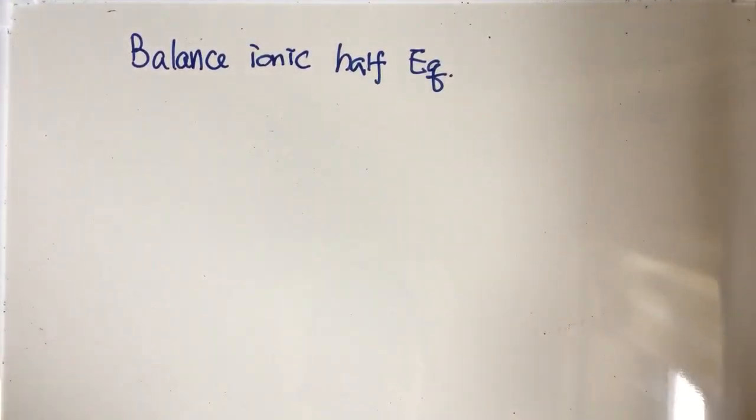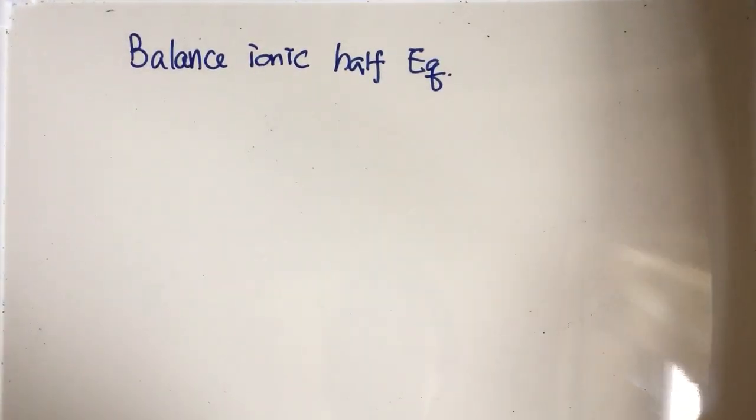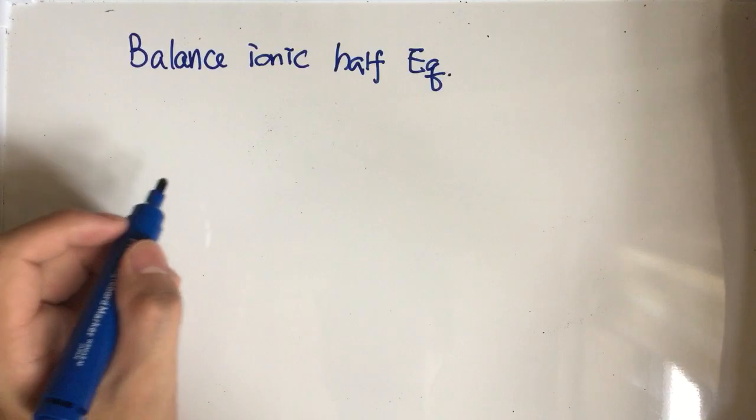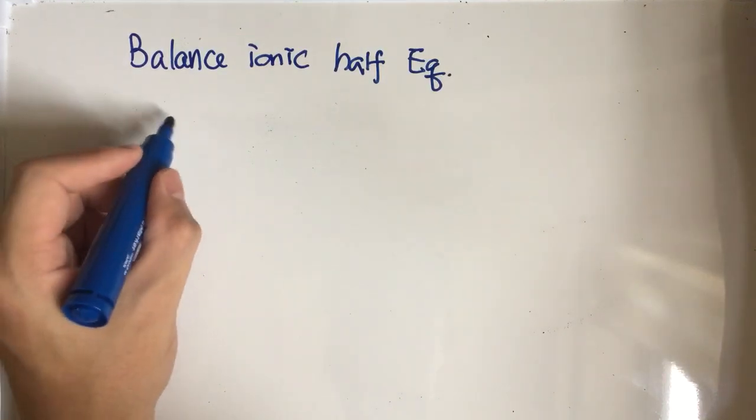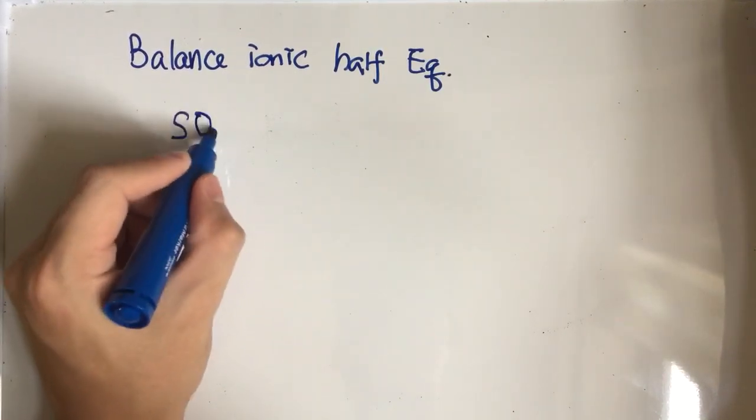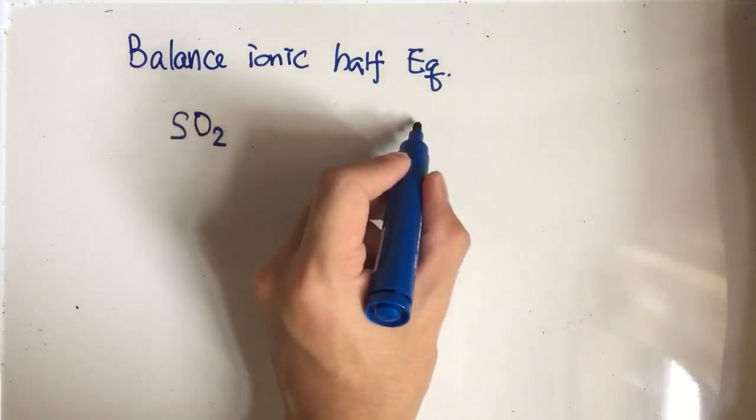In this video, I'm going to show you how to balance the ionic half equation of sulfur dioxide. First, you have to write down the reactant and the product. The reactant is sulfur dioxide (SO2) and the product is sulfate ion (SO4^2-).